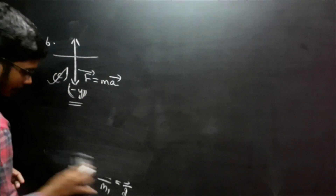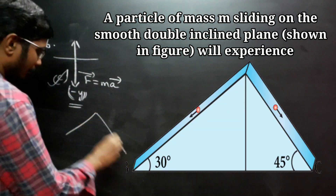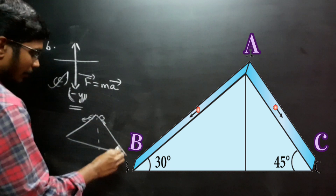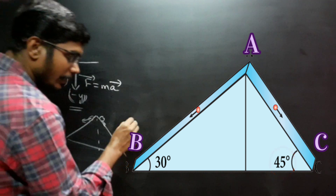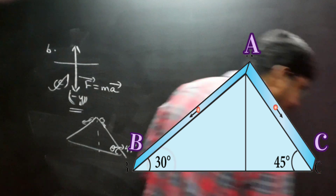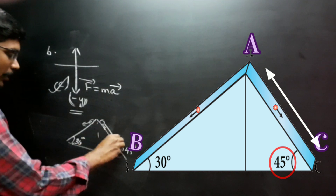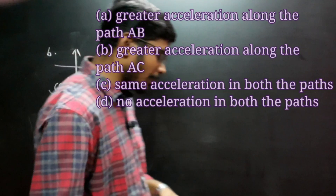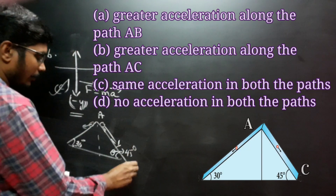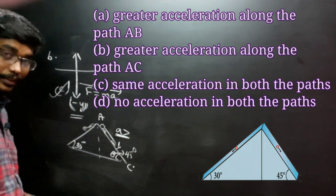Question number 7: You have an inclined plane with two bodies. This angle is 45 degrees, this angle is 30 degrees, and this angle is 50 degrees. Looking at option B — greater acceleration along path AC — because of the inclination angle, the body can accelerate more.